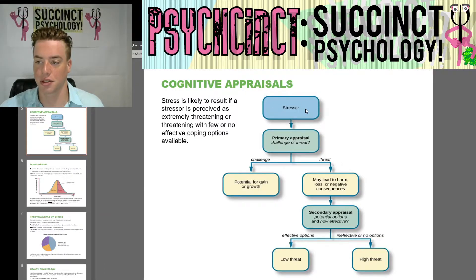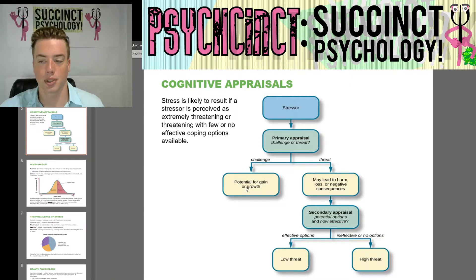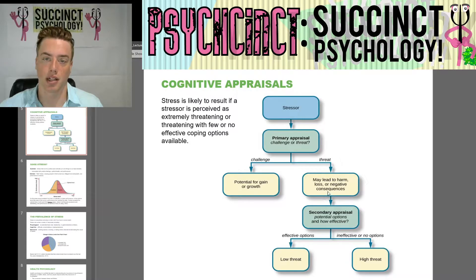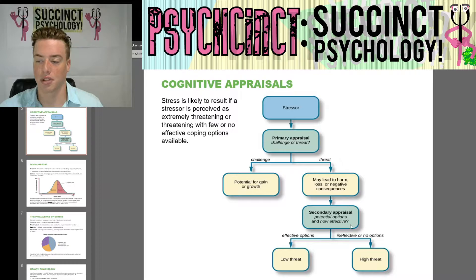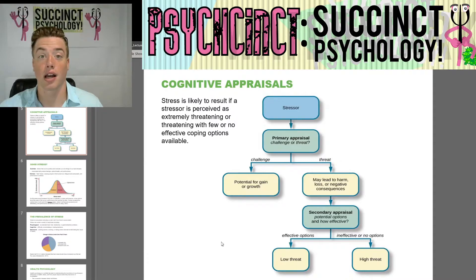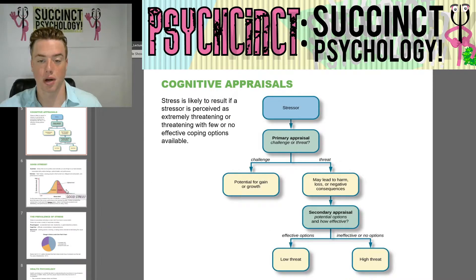Here we have a chart. The stressor leads to a primary appraisal: challenge or threat. If it's a challenge, there's potential for gain or growth; if perceived as a threat, it may lead to harm, loss, or negative consequences. Then you have a secondary appraisal — what are the potential options and how effective are they? Effective options equal low threat, but ineffective or no options equals high threat.